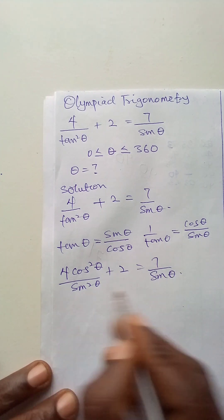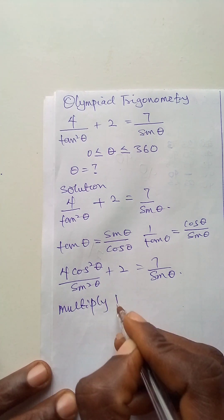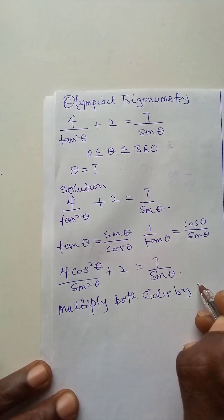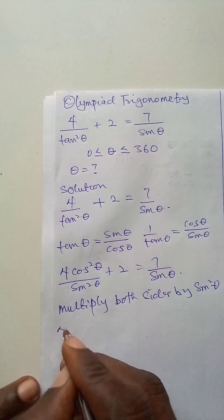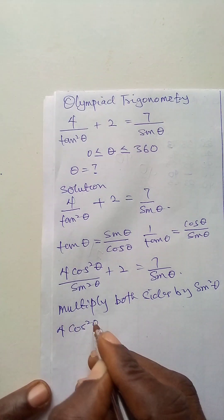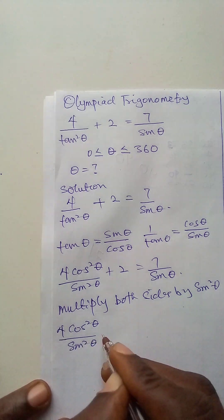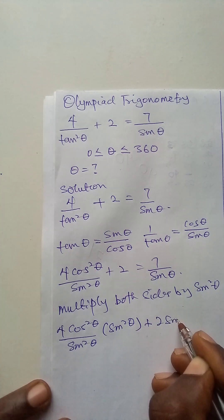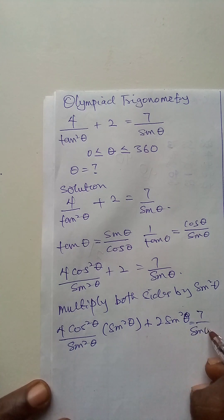I will multiply both sides by sine squared theta. It becomes 4 cos squared theta plus 2 sine squared theta is equal to 7 sine theta.